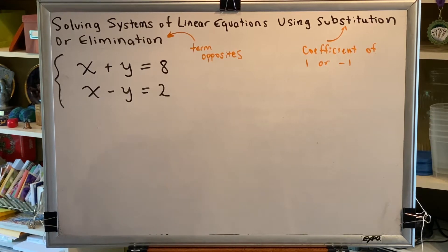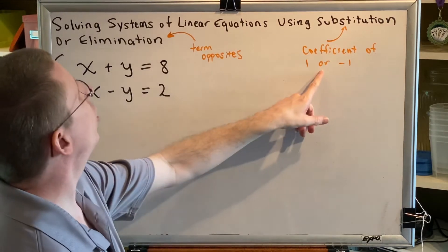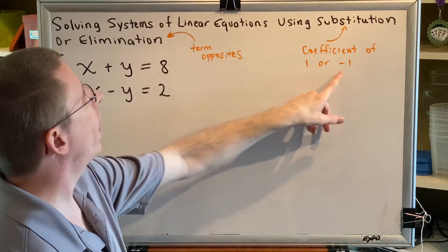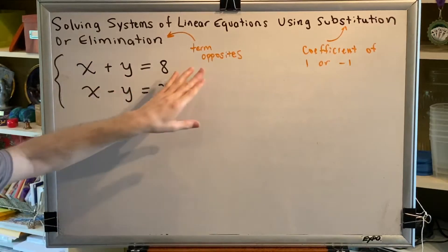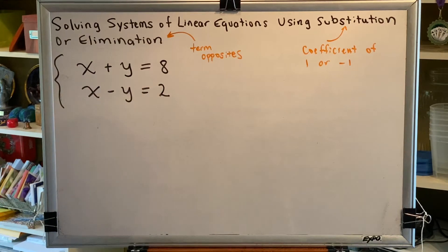In previous videos, we've shown that if you want to use the substitution method, you need to identify a coefficient of 1 or negative 1 for one of your x or y terms. And if you want to use the elimination method, you should try to create term opposites.